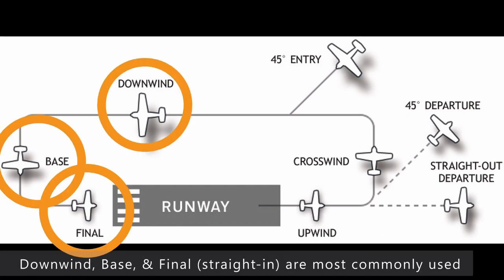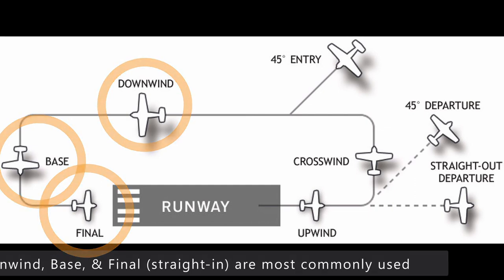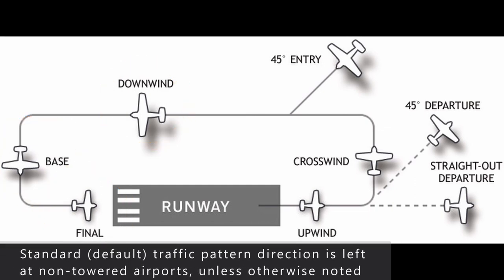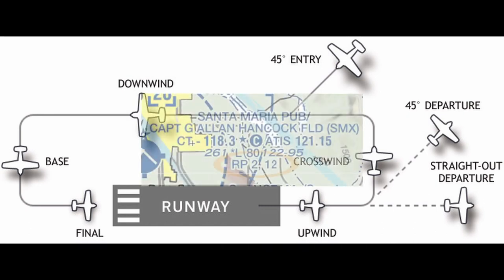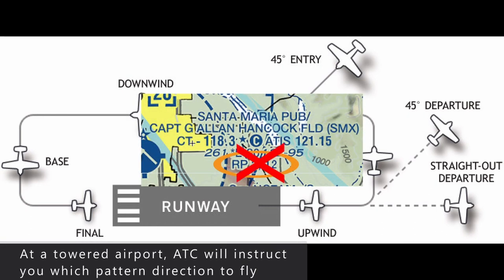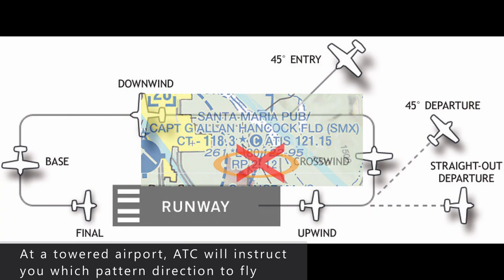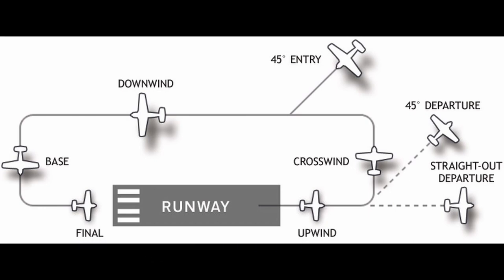Remember that despite the standard traffic pattern direction being left traffic, and some runways published with a right-hand traffic pattern, at a towered airport all published or expected traffic pattern directions are irrelevant, as the air traffic controller will instruct you which direction of pattern to fly. It's their airspace, and they may have a reason to have you on the opposite side of the published traffic pattern.